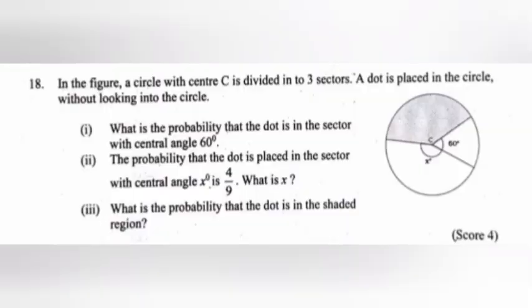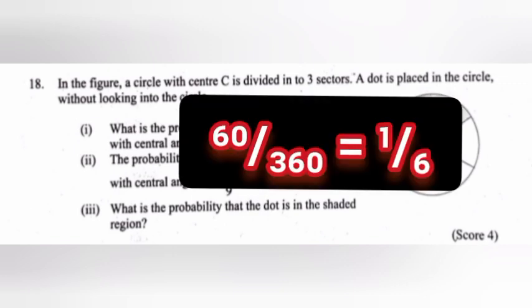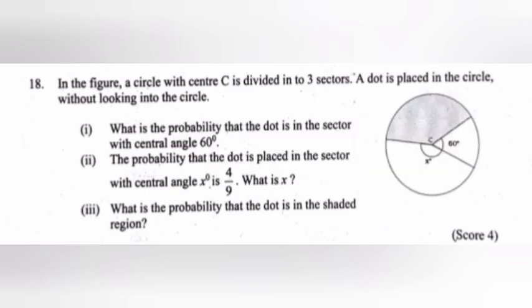18. In the figure, a circle with center C is divided into three sectors. A dot is placed in the circle without looking into the circle. 1. What is the probability that the dot is in the sector with central angle 60 degree? Answer: Probability 60 by 360 equal 1 by 6.